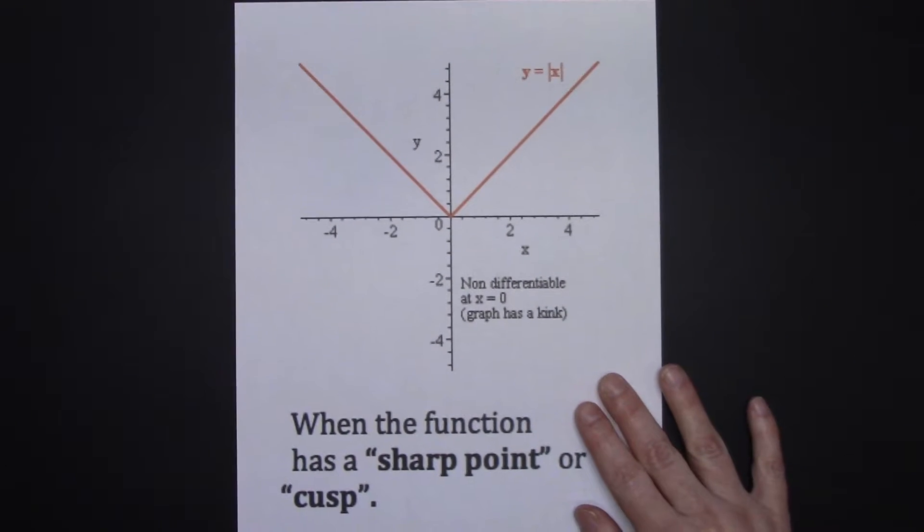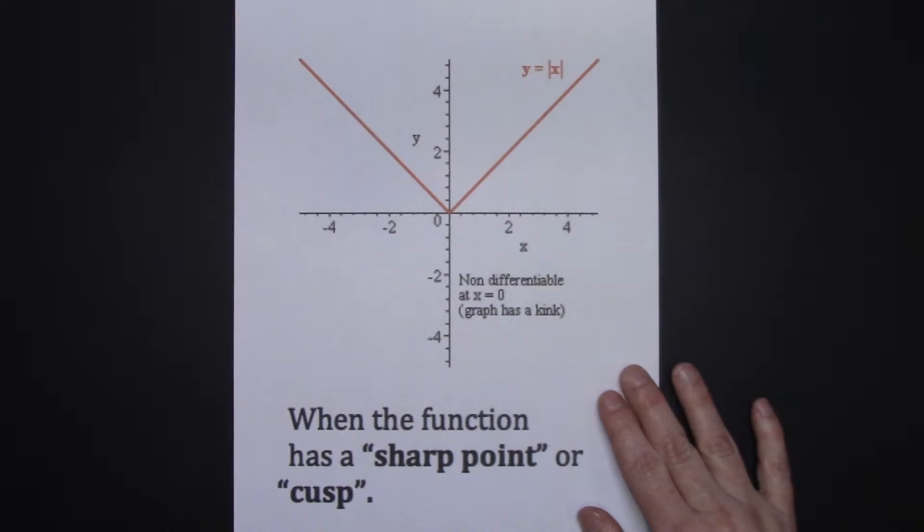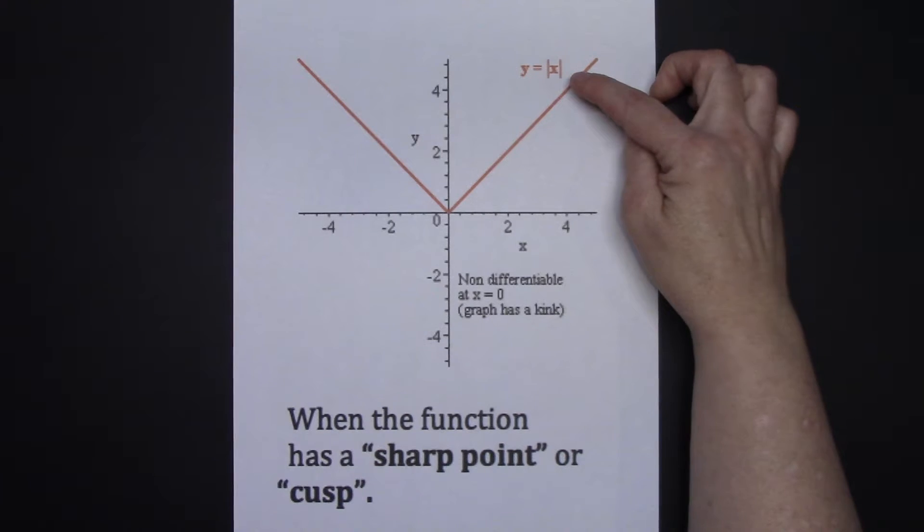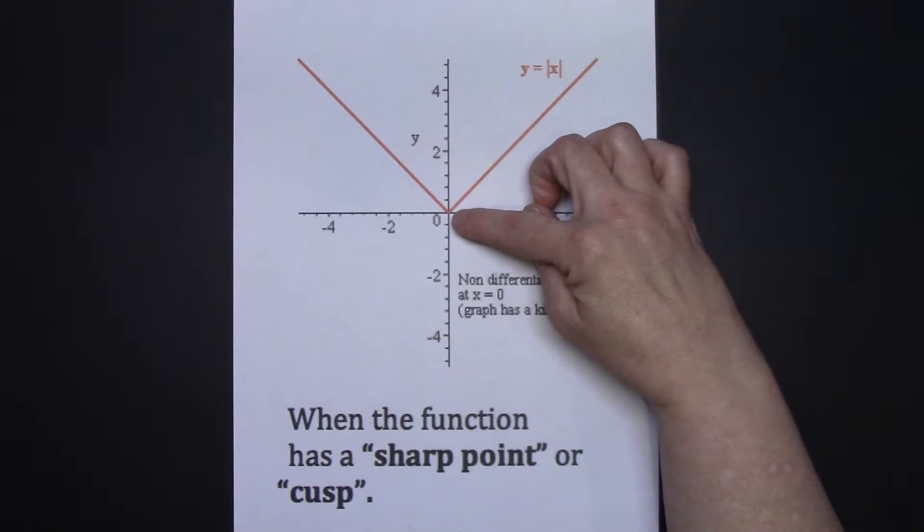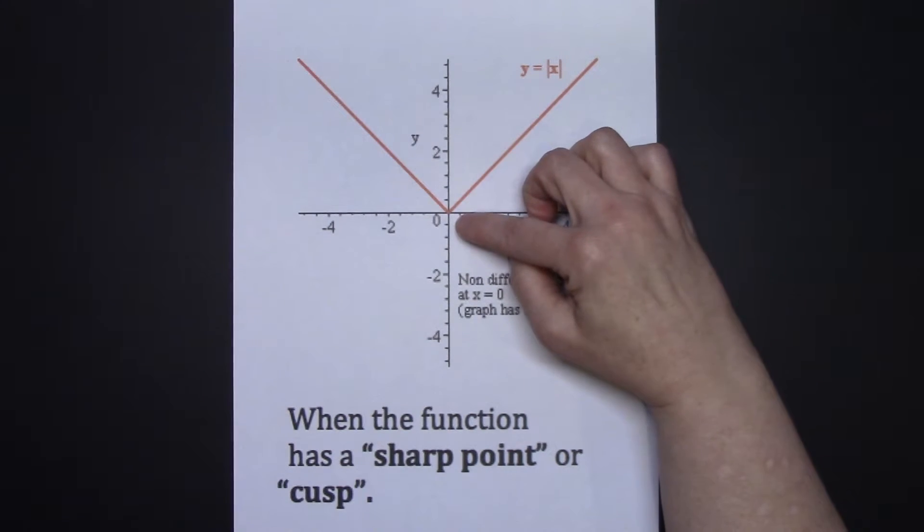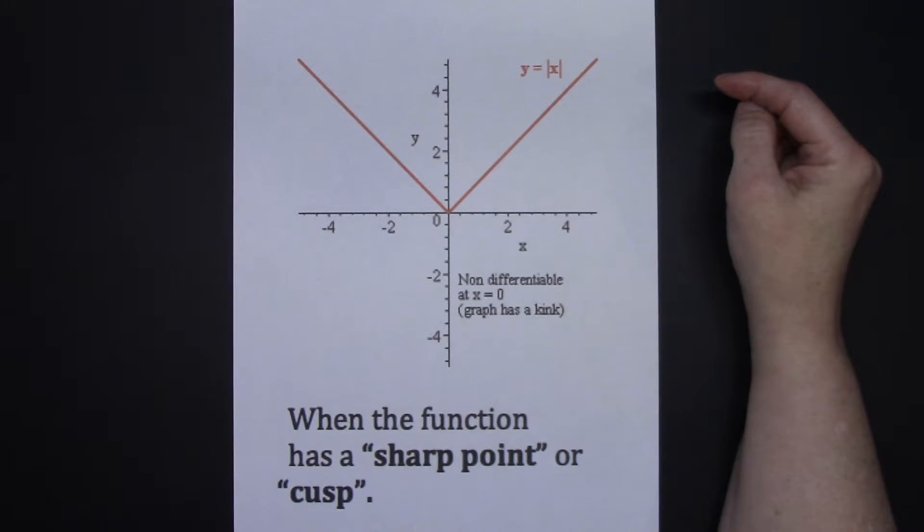As a third case, when a function has a sharp point or a cusp, then it is not differentiable at that point. So the absolute value of x has the cusp at x equals 0, so the function is not differentiable at x equals 0 because of the cusp.